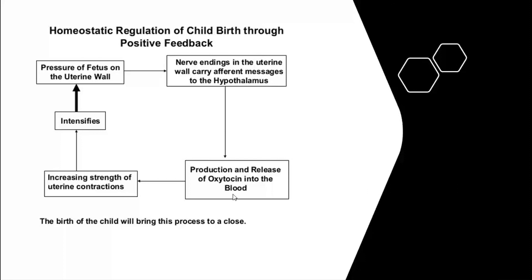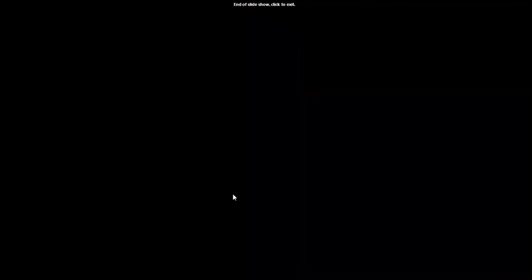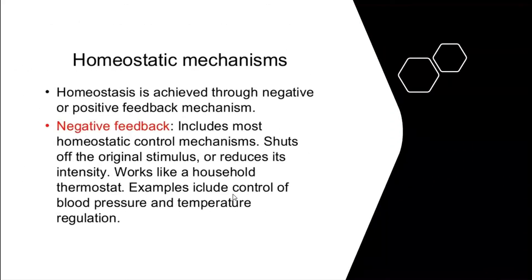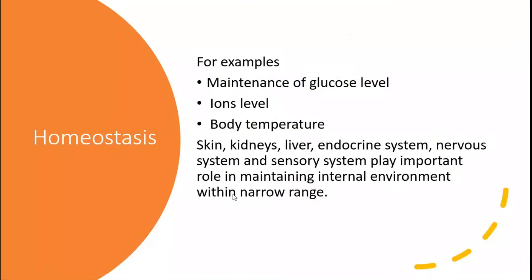Homeostasis is the normal level — in any body cell, hormones and the overall body mechanism are normally performed by homeostasis. If the homeostasis mechanism is removed from the body, different diseases and abnormalities will be introduced. For example, if the negative feedback mechanism does not control glucose levels in the blood, there is a chance of diabetes. This is all about homeostasis. We hope that everyone understood. If anyone has any questions, please ask. Thank you so much.